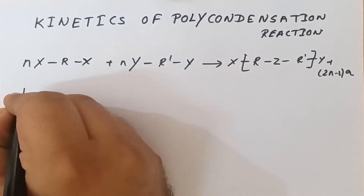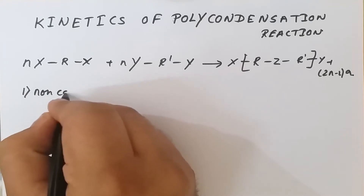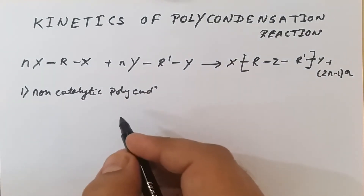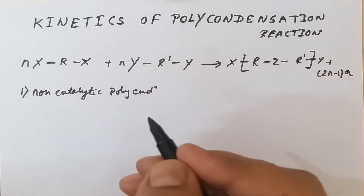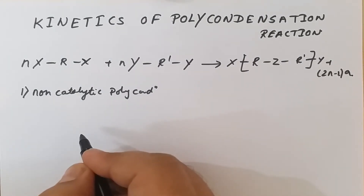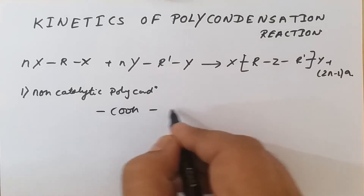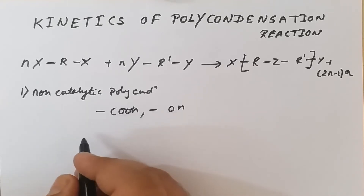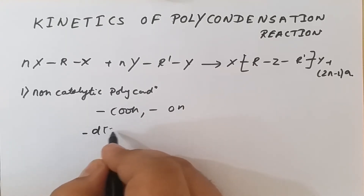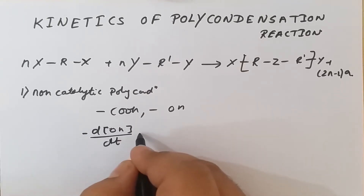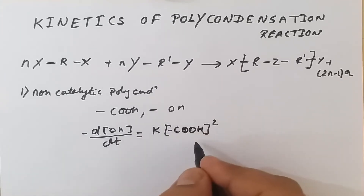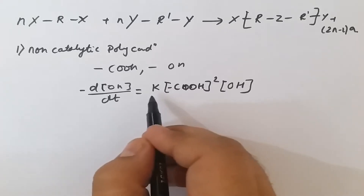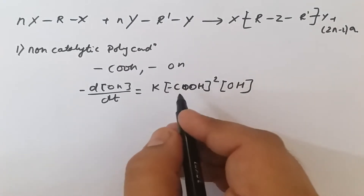First, consider non-catalytic polycondensation. For a polyesterification reaction between a dicarboxylic acid and a diol, the rate of reaction is second order with respect to acid concentration and first order with respect to alcohol concentration, where k is the esterification rate constant.